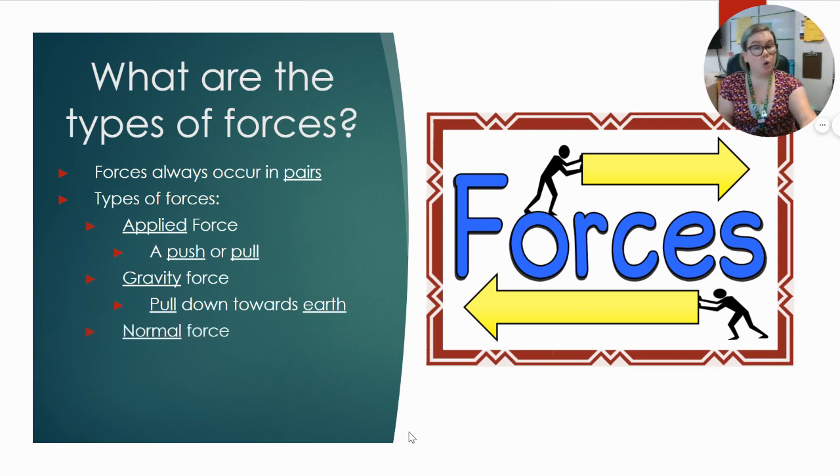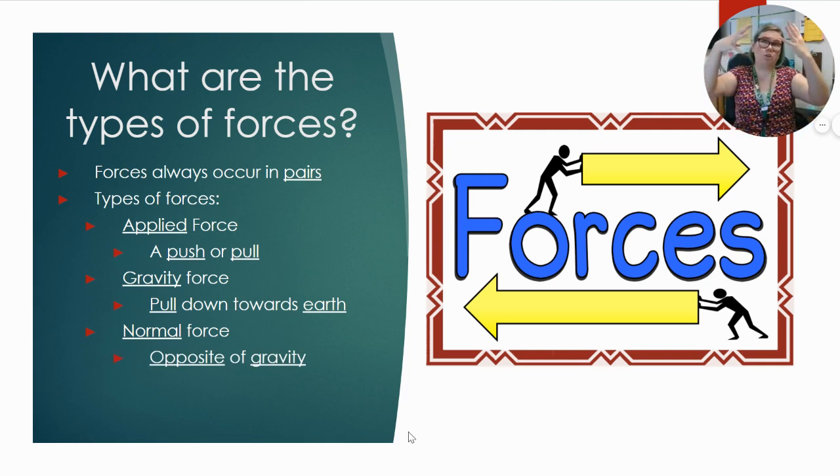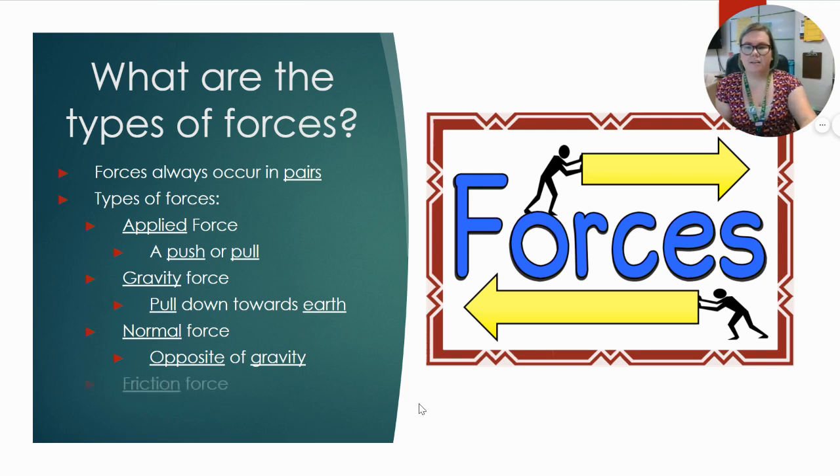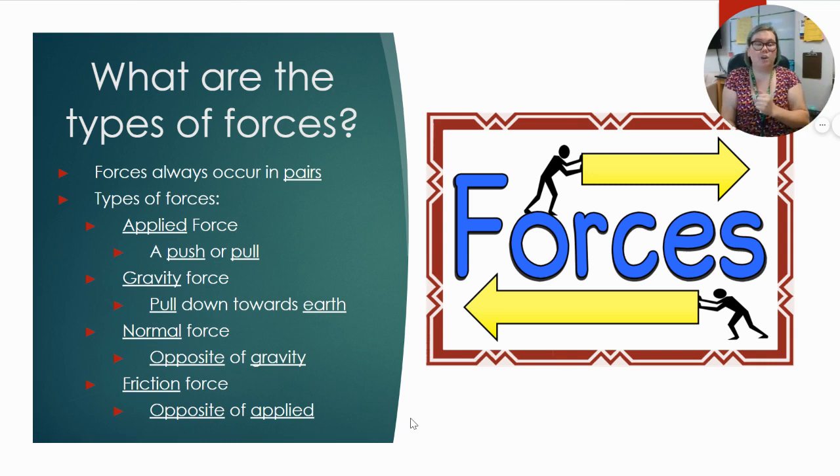We have the normal force, and this is the opposite of gravity. It's basically the reason you don't fall through the ground, if that makes sense. And finally, the friction force, which is the opposite of your applied force. So if I'm pulling something this way, my friction force is going that way. It's always the opposite of the applied force.